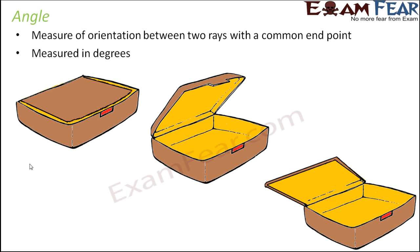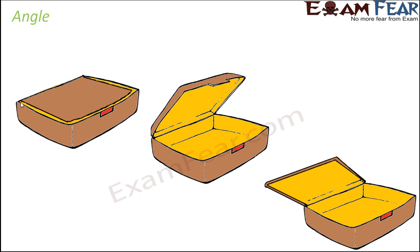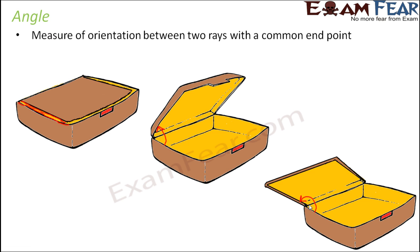Let's say that the bottom surface is somewhere here and this is the lid. Both of them are oriented along the same direction, so there is no difference in their orientation when the box was closed. Now when you gradually start opening the box, you see that there is an orientation between the lid and the base. When you totally open the box, there is some kind of orientation between the two surfaces. So an angle is a measure of orientation between two rays with a common end point.